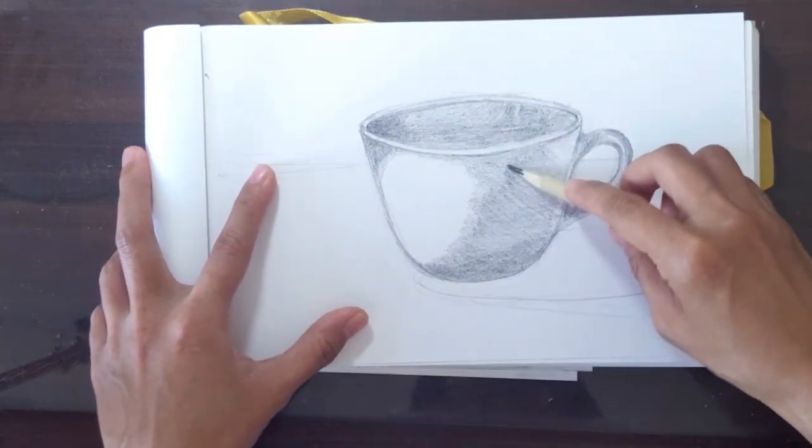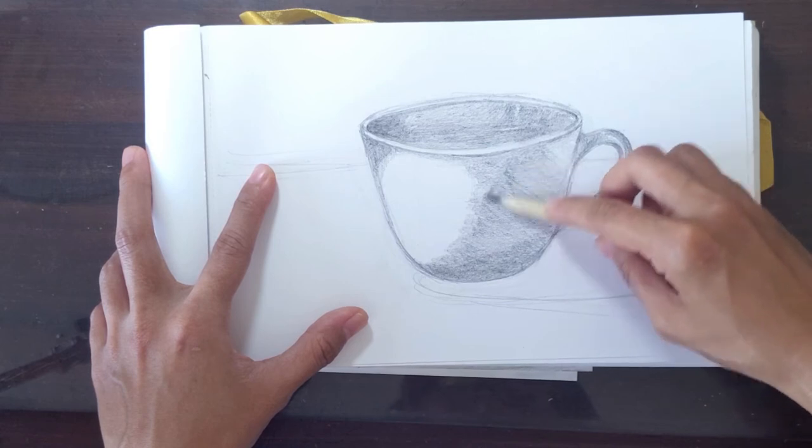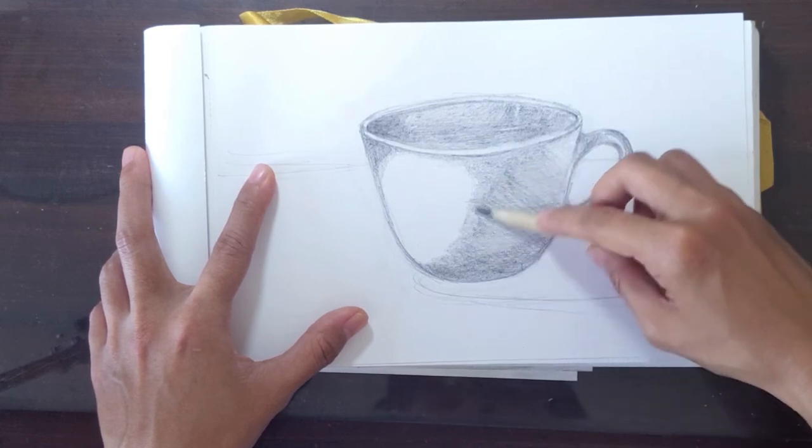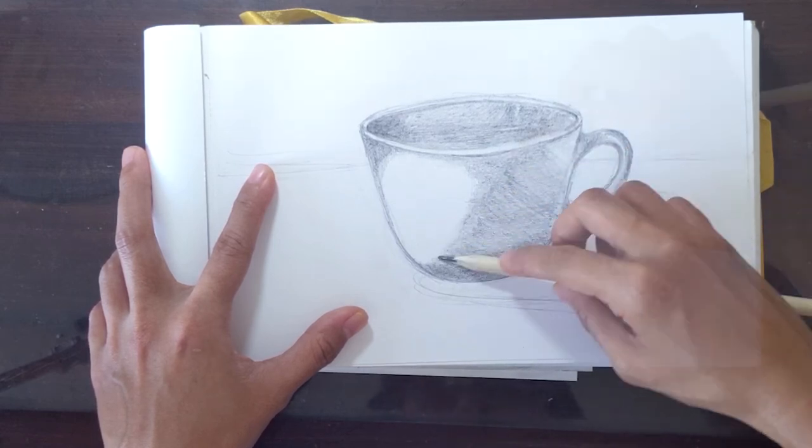After this, we now blend the shading by very lightly shading over the dark and light areas of your cup.